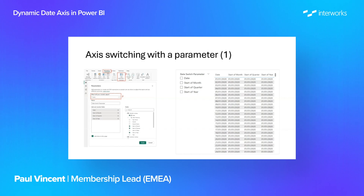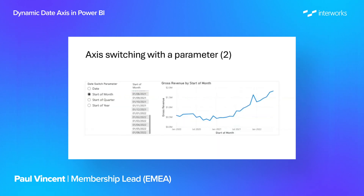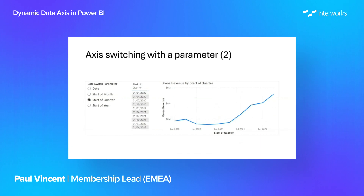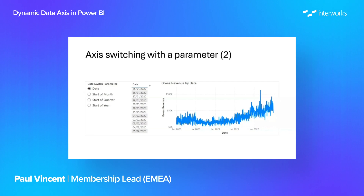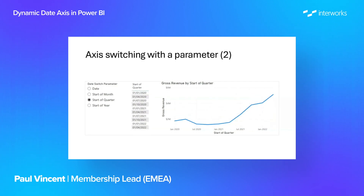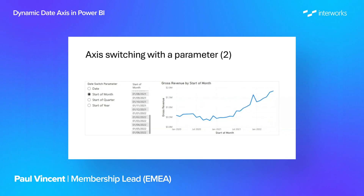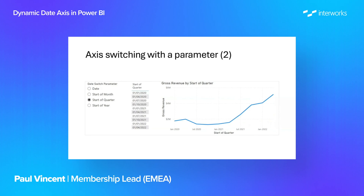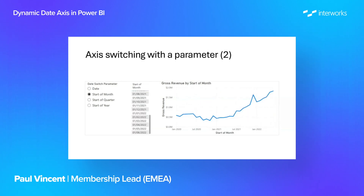You can think of it as building a date table just like you see on the right of the screen. We can use the parameter to add a slicer to our view, and if we select an individual selection — for example date or start of month — it'll reduce the columns in that table and just bring in the columns we've selected. We've built the line chart using the parameter date, and you can see that as we change the switch parameter on the left, the column brought in changes — going from date to start of month to start of quarter to start of year.